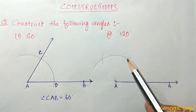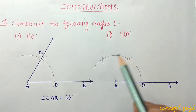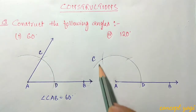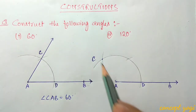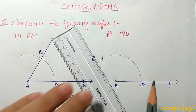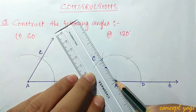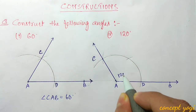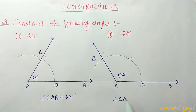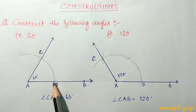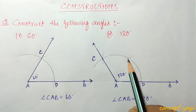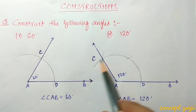Up to the first cut this is 60 degrees, but we need 120 degrees. Say the second cut point is C. Now we will draw a ray passing through points A and C. This angle is 120 degrees — angle CAB is 120 degrees. Just remember: for 60 degrees you need to do one cut, but for 120 degrees you need to do two cuts with the same radius.